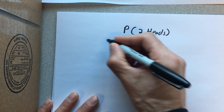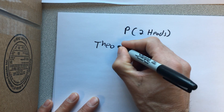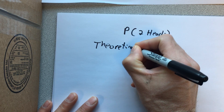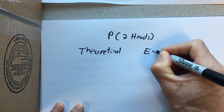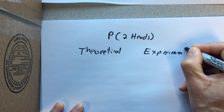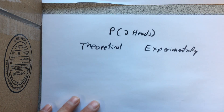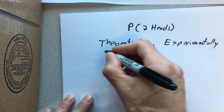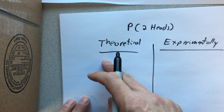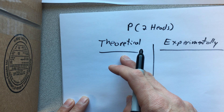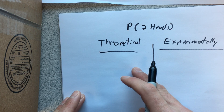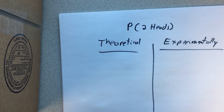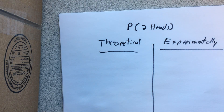I'm going to approach this both theoretically and experimentally. The theoretical probability is a fraction: the number of ways something can occur divided by the total number of things that can happen. There's an underlying assumption that the various outcomes are all equally likely — and sometimes that's the case, and sometimes it's not.